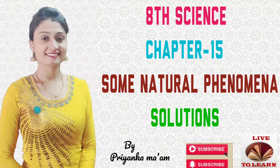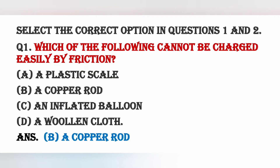The first question is: which of the following cannot be charged easily by friction? The answer is a copper rod, because the copper rod is a conductor. If we try to charge it, the charge will not be static — it will flow. So the copper rod cannot be charged by friction.